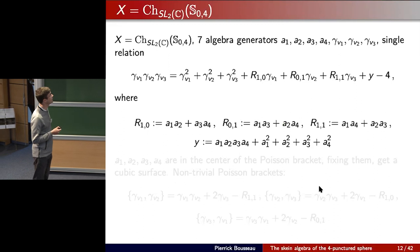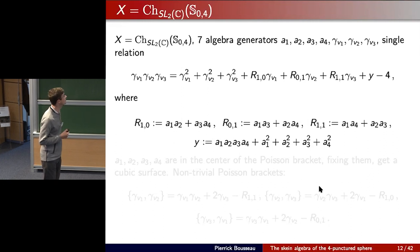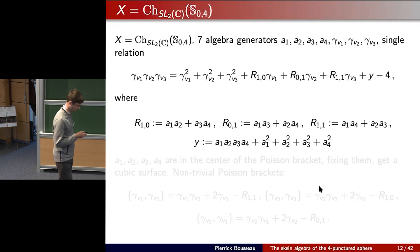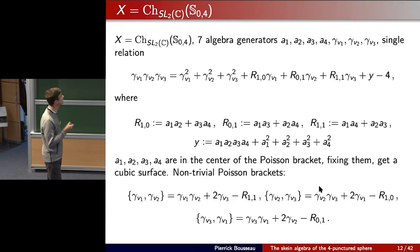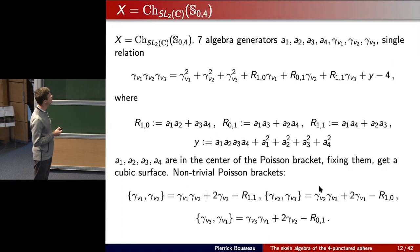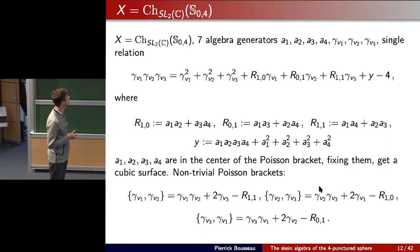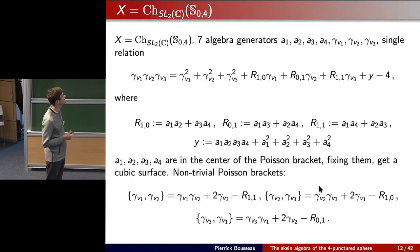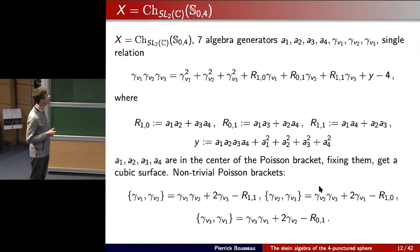These seven generators satisfy a single equation, already known in the 19th century. You should think of a_1, a_2, a_3, a_4 as parameters; fixing them, there remain three variables γ_{v1}, γ_{v2}, γ_{v3}, and the equation is cubic in these three variables — it starts with γ_{v1} γ_{v2} γ_{v3} equals something at most quadratic. So fixing the a_i's, you get an affine cubic surface in affine three-dimensional space. This is a four-parameter family: four parameters plus a two-dimensional surface gives the six-dimensional space X.